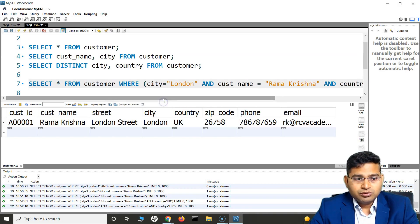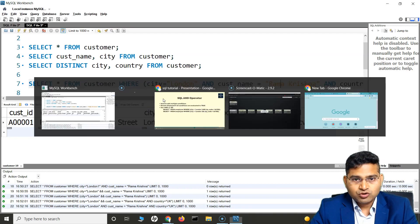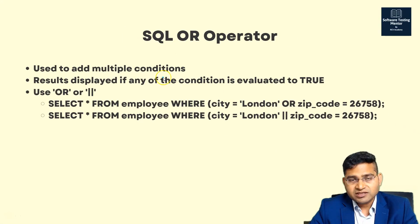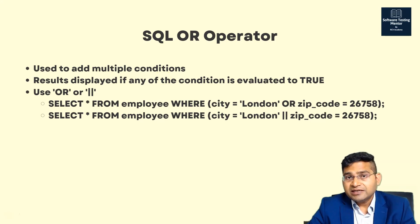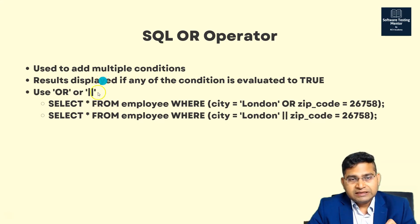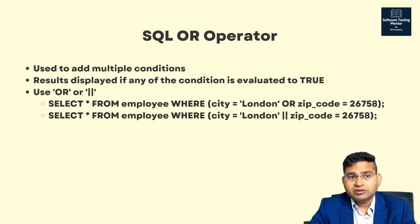Now let's look at the OR operator. Similar to AND, it is used to add multiple conditions, but with OR, even if just one of the conditions is evaluated to true, the results will be displayed. So if any condition is true, the result is returned. Think of it like: pick apple or mango — even if one side doesn't match, as long as the other does, the overall condition is true.